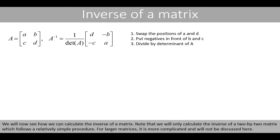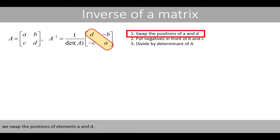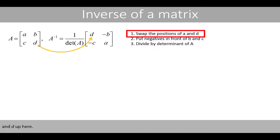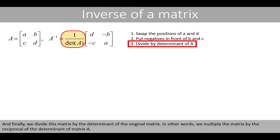We'll now see how we can calculate the inverse of a matrix. Note that we can only calculate the inverse of a 2 by 2 matrix using this relatively simple procedure. For larger matrices it is more complicated and will not be discussed here. In order to calculate the inverse of matrix A, we swap the positions of the elements A and D, put A down here and D up here. Then we put negatives in front of B and C. And finally we divide this matrix by the determinant of the original matrix — in other words we multiply the matrix by the reciprocal of the determinant of matrix A.